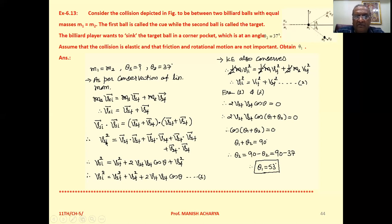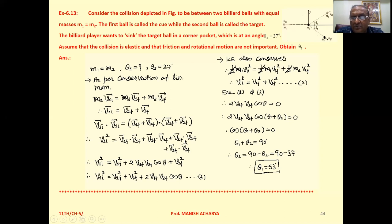So we can write V1i squared on the left. On the right, V1f dot V1f is V1f squared, and V2f dot V2f is V2f squared. Let theta be the angle between V1f and V2f. By the definition of dot product, V1f dot V2f equals V1f V2f cos theta, and since this cross term appears twice, we get 2 V1f V2f cos theta. Therefore: V1i² = V1f² + V2f² + 2 V1f V2f cos theta — equation 1.